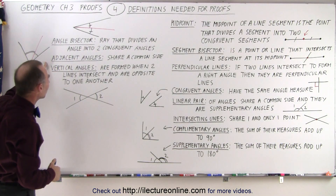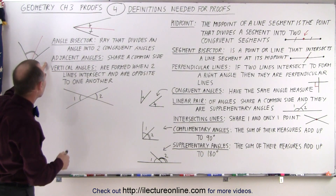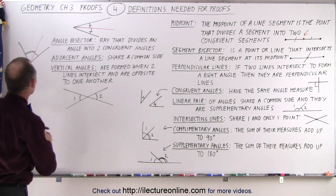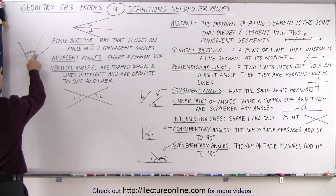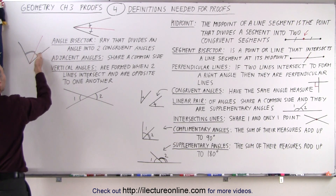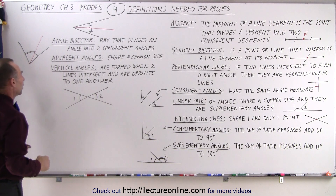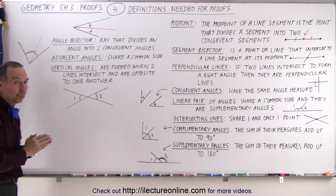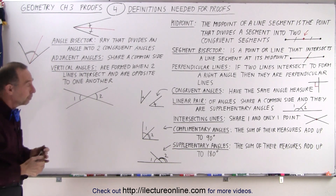Adjacent angles share a common side. Here we have an angle, here we have another angle, and there's a common side that they both share. They don't have to be congruent, although they could be.